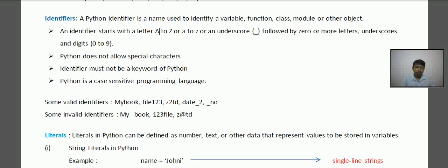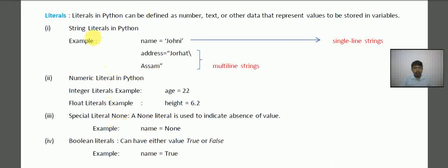Then next are the literals. Now literals. Literals in Python can be defined as number, text, or other data that represent values to be stored in variables. So the values which are stored in variables are known as the literals.